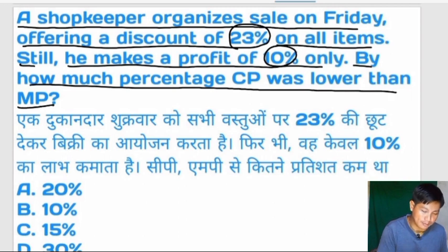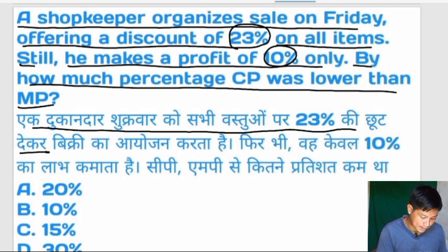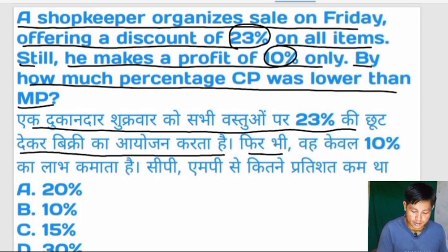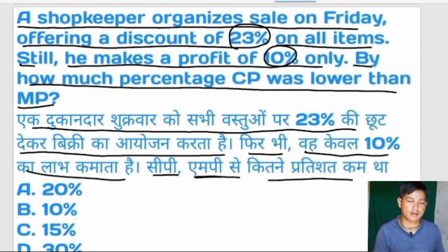Do kanda — on Friday, offering a discount of 23% on all items, still making a profit of 10%. How much lower was CP than MP?